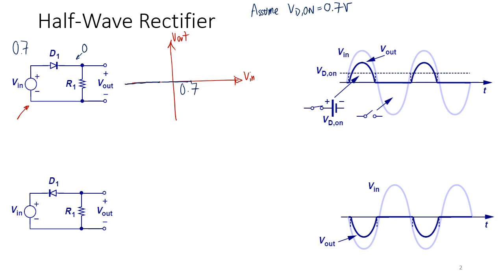Now what will happen after that? V_in is increasing, so it becomes 0.8, 0.9, 1 volt, 2 volts, 3 volts, it just goes up. But since my diode is on, it is replaced with this voltage source of 0.7. So when the input becomes 2 volts, the output becomes 1.3. When the input becomes 10 volts, the output becomes 9.3.